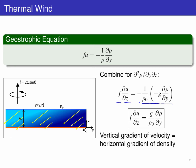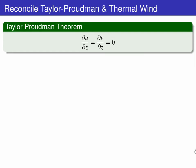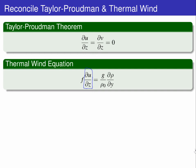The Taylor-Proudman theorem states that flow moves as columns with no vertical gradients of horizontal velocities, which is in direct contrast to the thermal wind equation.